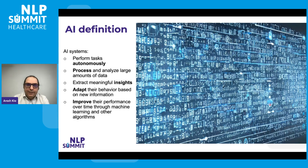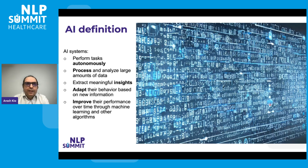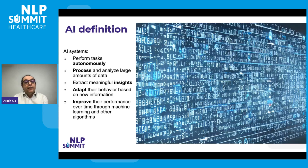Everything in this system should be automated — that's the first feature. Second, the system should be able to process and analyze large amounts of data and extract meaningful clinical insights. It should also adapt its behavior; for example, when we create a patient profile, not all features are always available, so it must handle missing values and other real-time prediction challenges. The system should also improve its performance over time — continuous learning is very important.